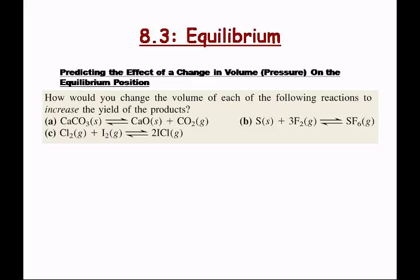Let's try a real reaction: CaCO₃(s) ⇌ CaO(s) + CO₂(g). How many moles of gas do we have on the left side? Zero — because it says 's' for solid. How many moles of gas on the right side? One — only CO₂ is labeled gas.